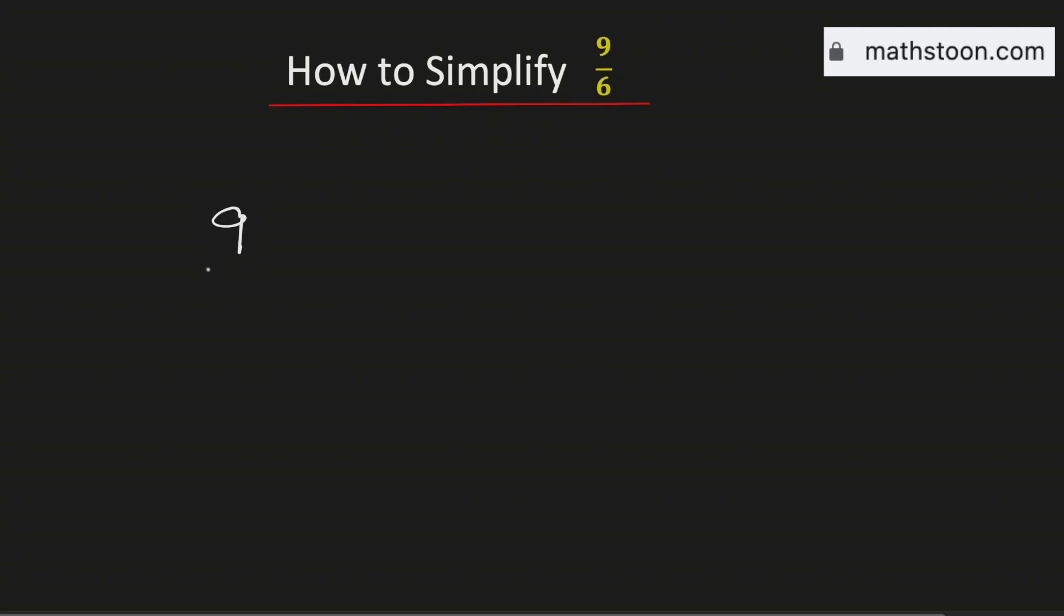In this video we will simplify the fraction 9 over 6. See that both the numbers are divisible by 3. Therefore to simplify it we need to divide both the numerator and the denominator by 3.